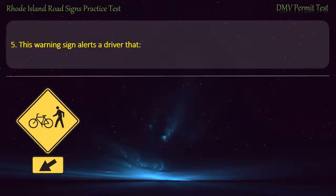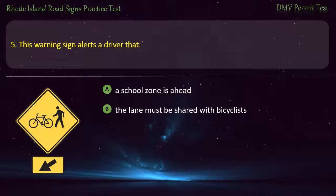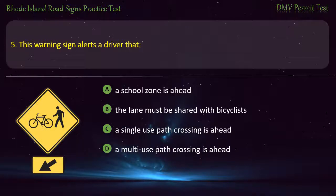Question 5. This warning sign alerts a driver that: a school zone is ahead; the lane must be shared with bicyclists; a single-use path crossing is ahead; a multi-use path crossing is ahead. Answer: A multi-use path crossing is ahead.